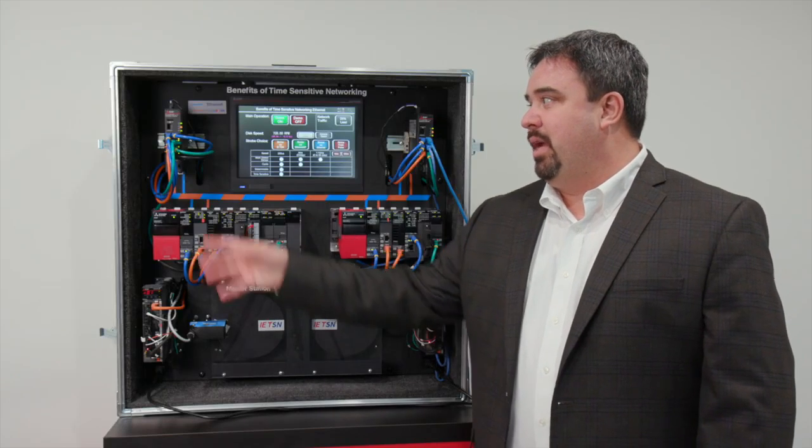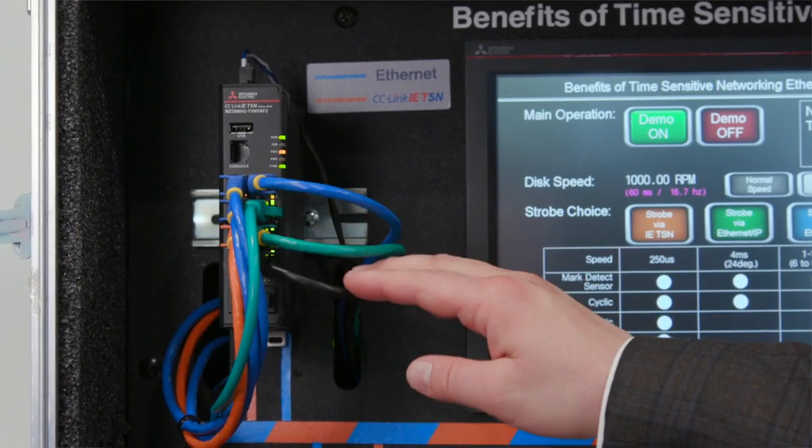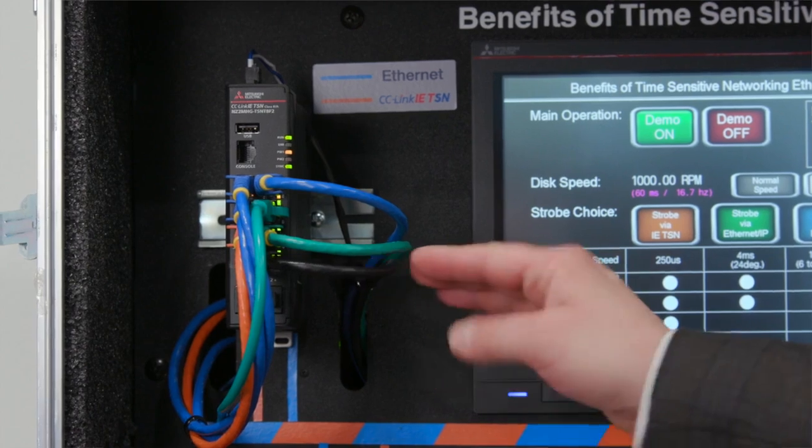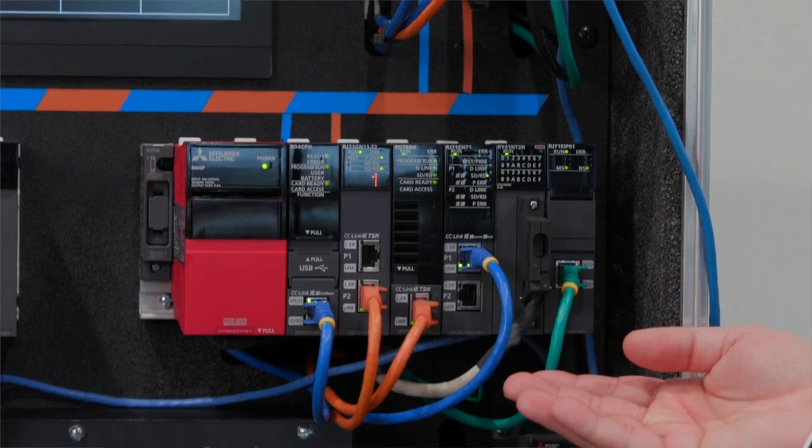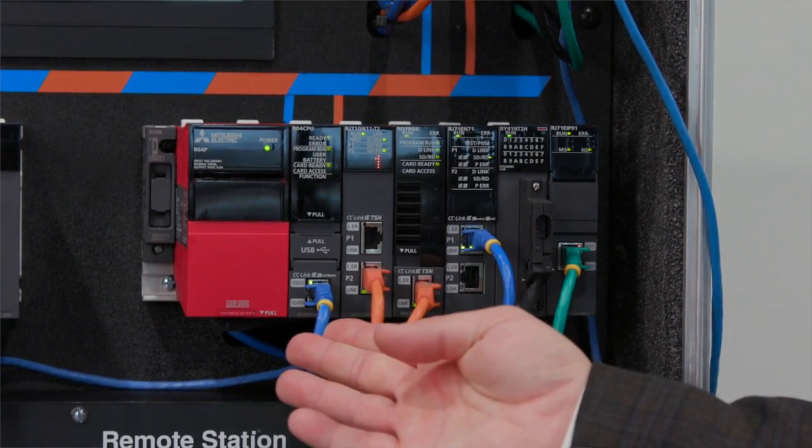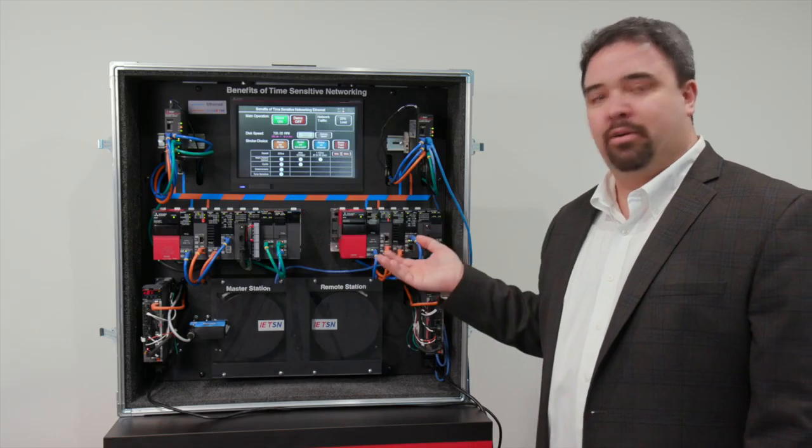All of that network is passed up to a CC-Link IETSN Ethernet switch. That switch is connected over to a remote station which also has a PLC. This is simulating two different systems, a master system and a remote system.